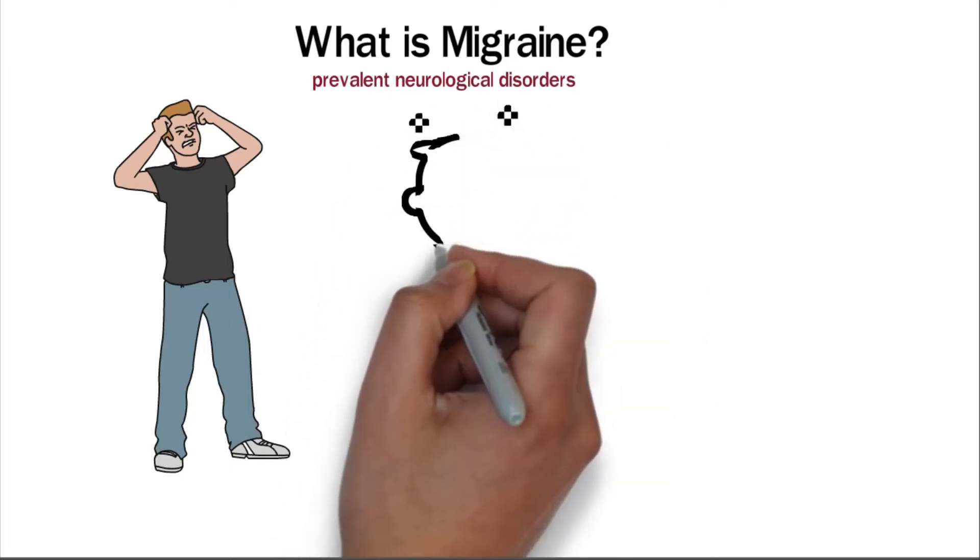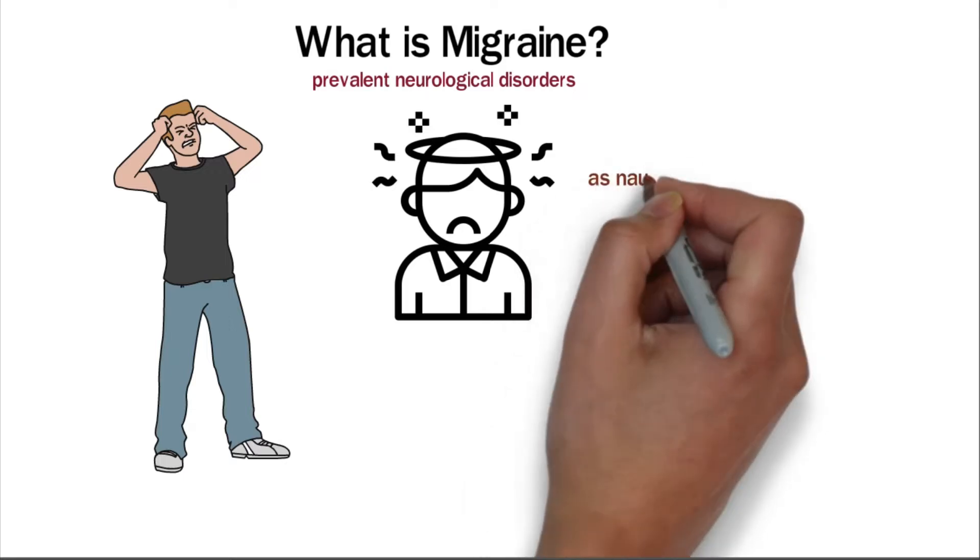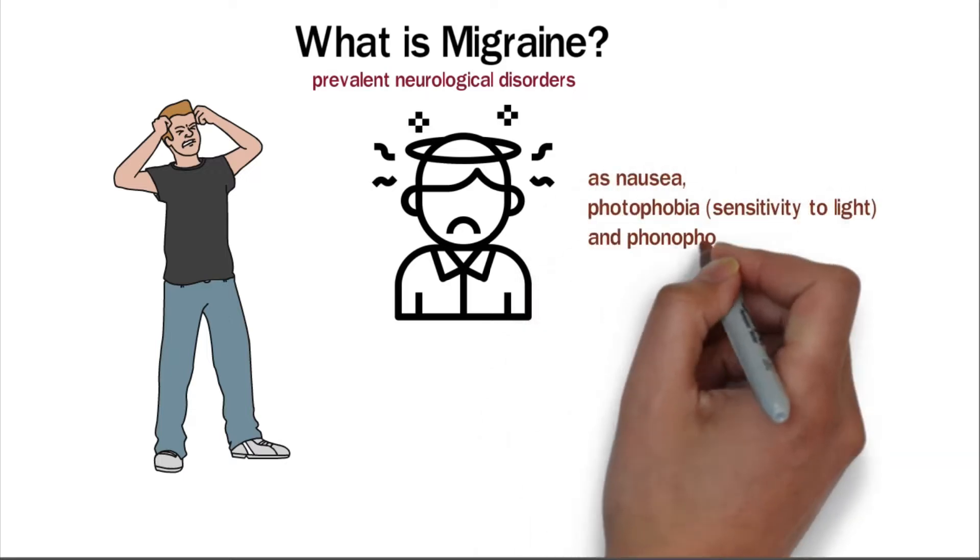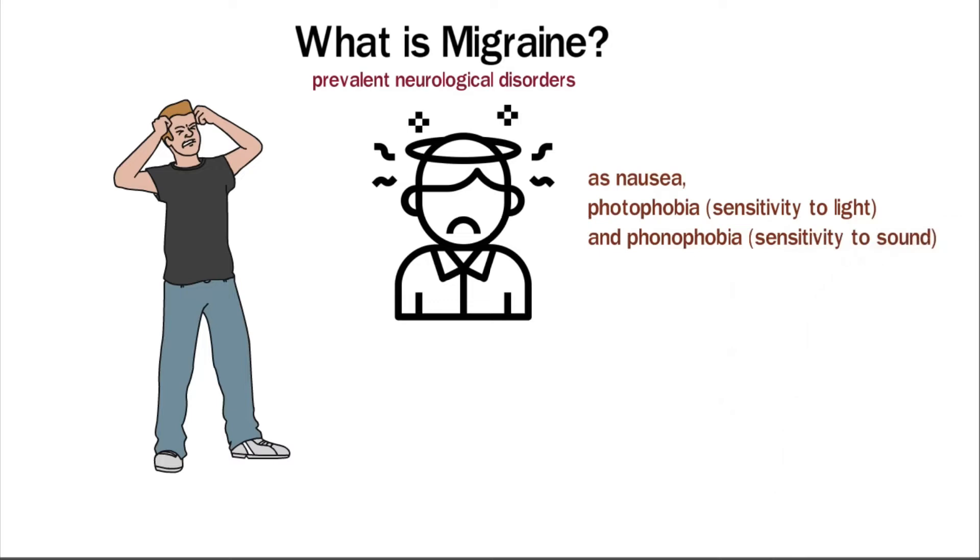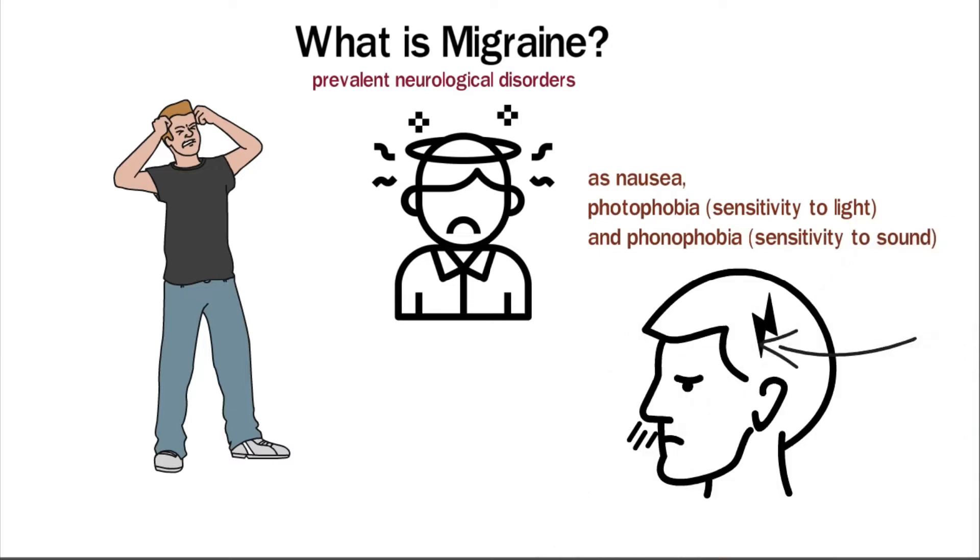Migraine is a complex disorder highlighted by moderate to severe headaches accompanied by other symptoms such as nausea, photophobia, which is sensitivity to light, and phonophobia, which is sensitivity to sound. Individuals living with migraine commonly report throbbing, pulsating pain, typically to one side of the head.